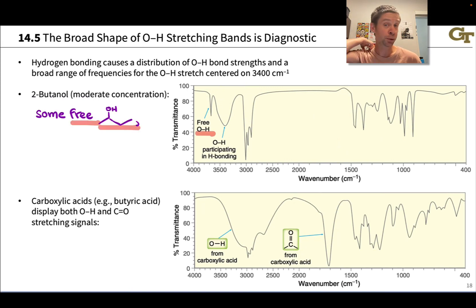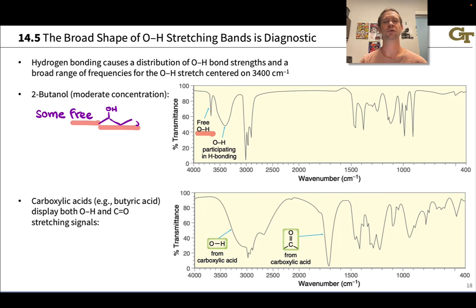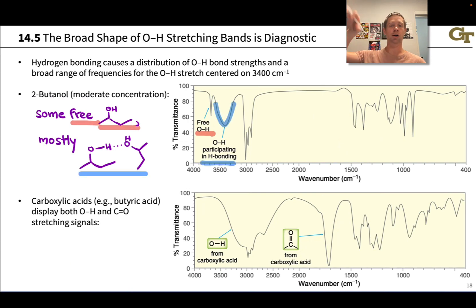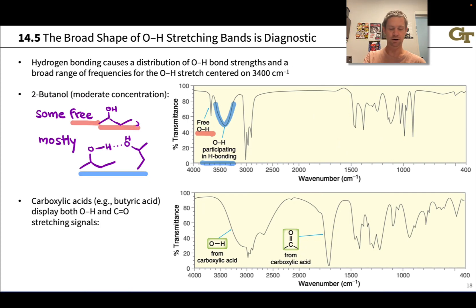For example, in a sample of 2-butanol diluted in a solvent, there is some free O-H that's not hydrogen bonding due to the relatively low concentration, and that shows up as a very sharp peak around 3600 wavenumbers. But most of the compound is bound up in hydrogen bonds, and those manifest as a very broad peak between about 3600 and 3200 wavenumbers. That broadness is very characteristic of the hydroxyl group due to its hydrogen bonding.